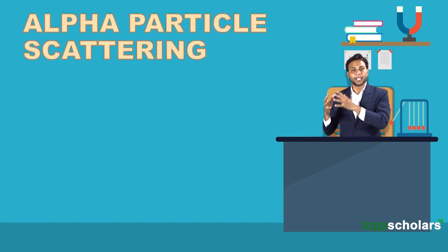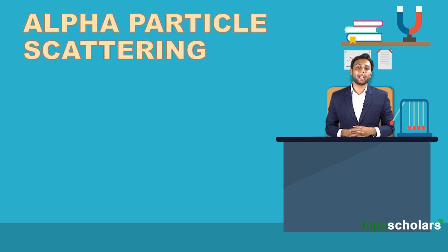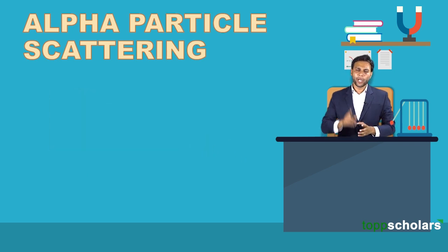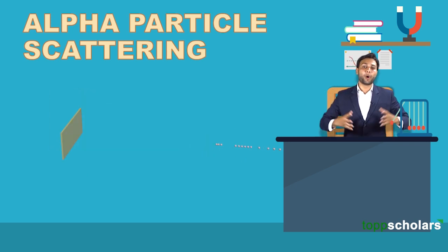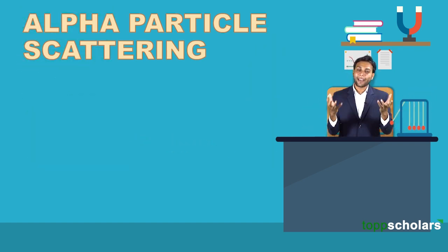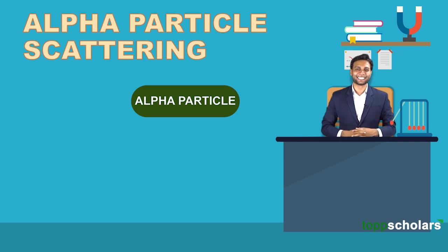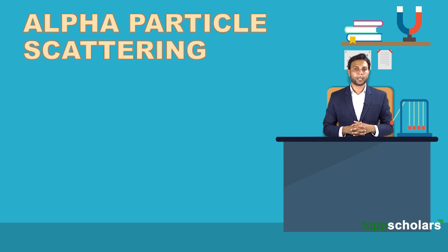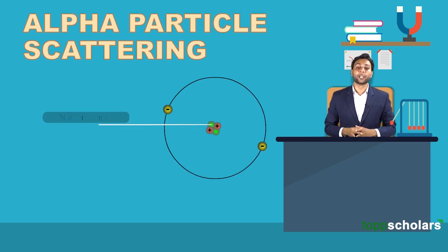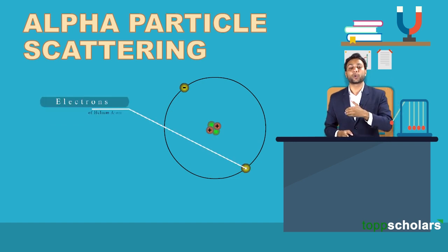After Thomson's plum pudding model came an experiment done by Rutherford's students, Ernst Marsden and Hans Geiger, called the alpha particle scattering experiment. The experiment used foils of various materials. During one experiment, they bombarded alpha particles on gold foil. But what is an alpha particle?